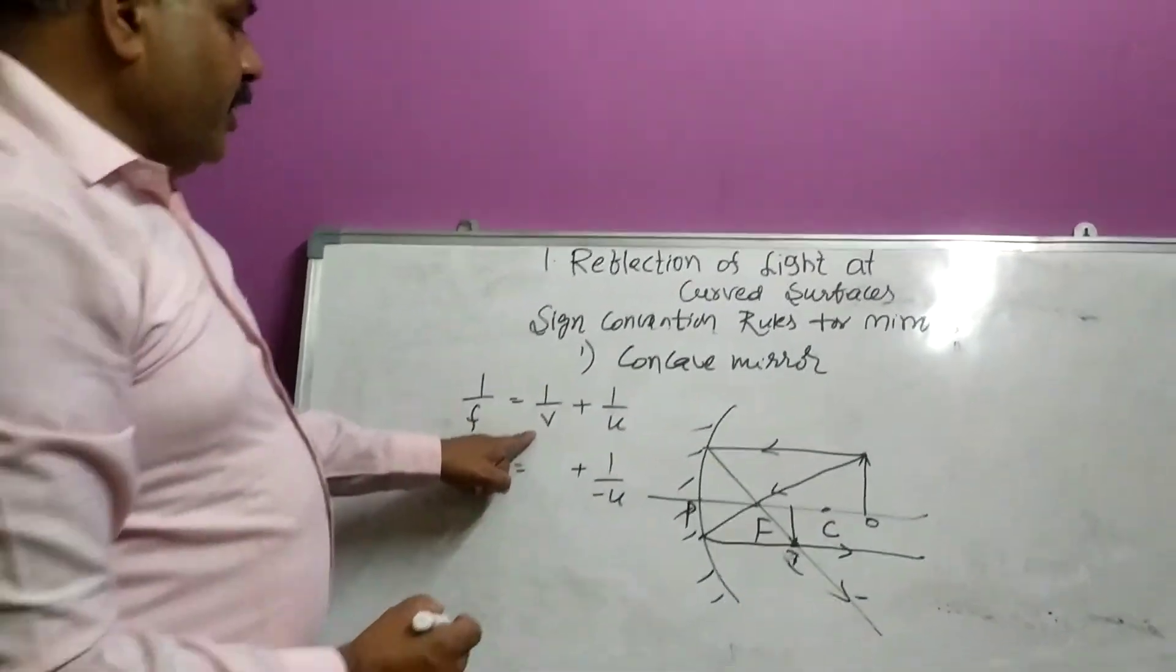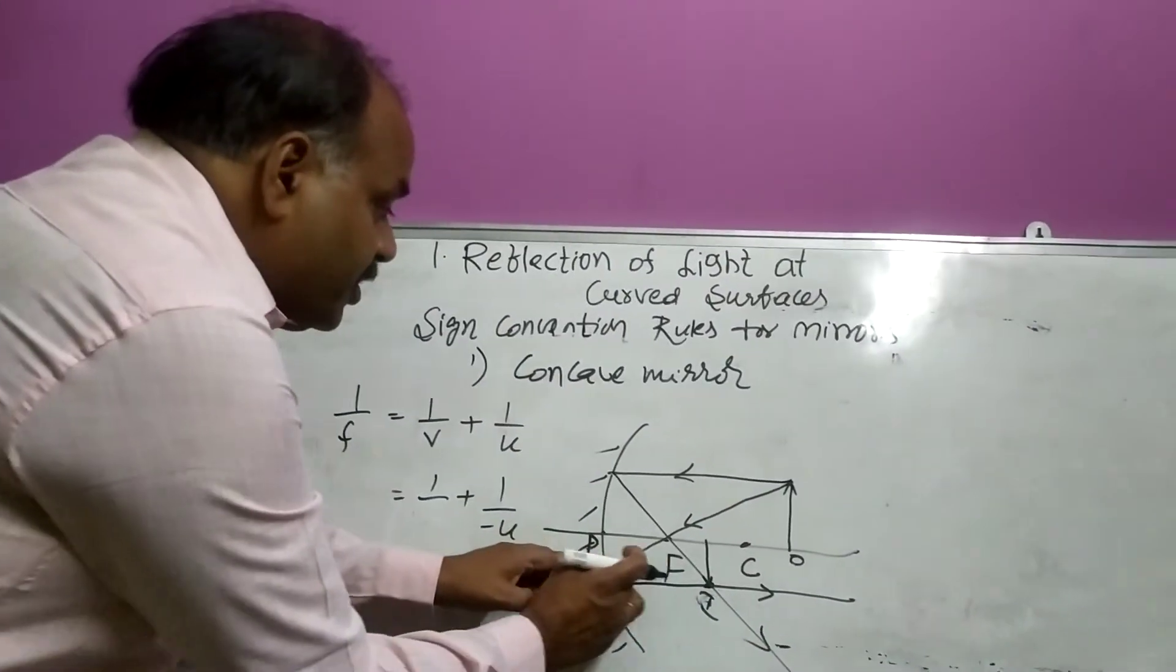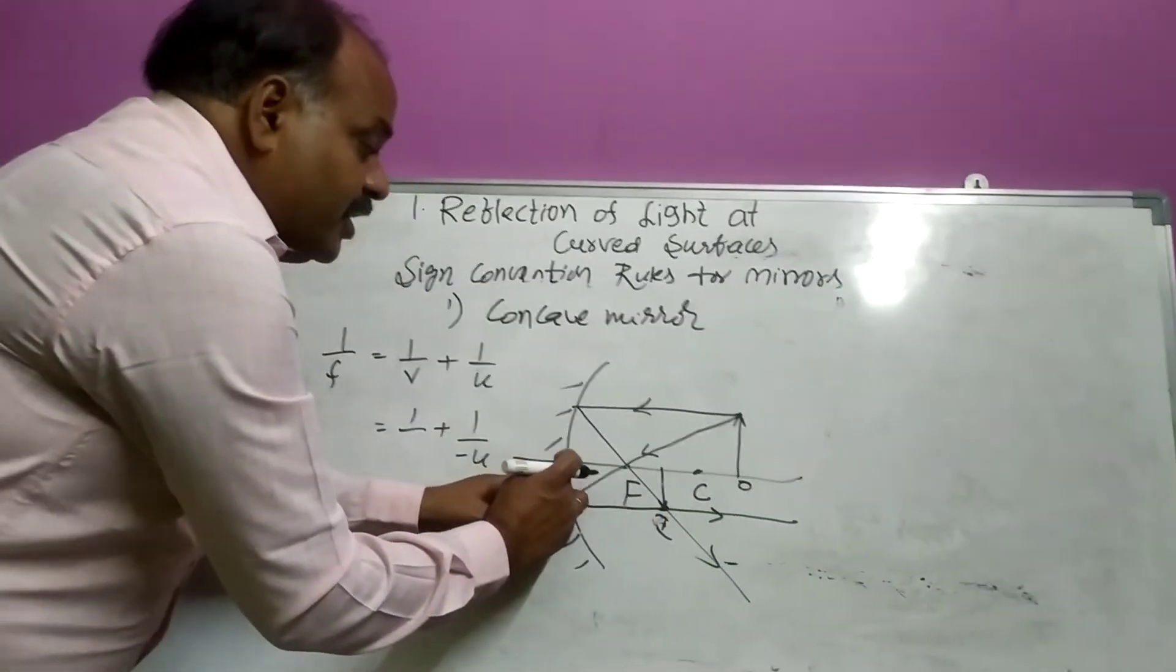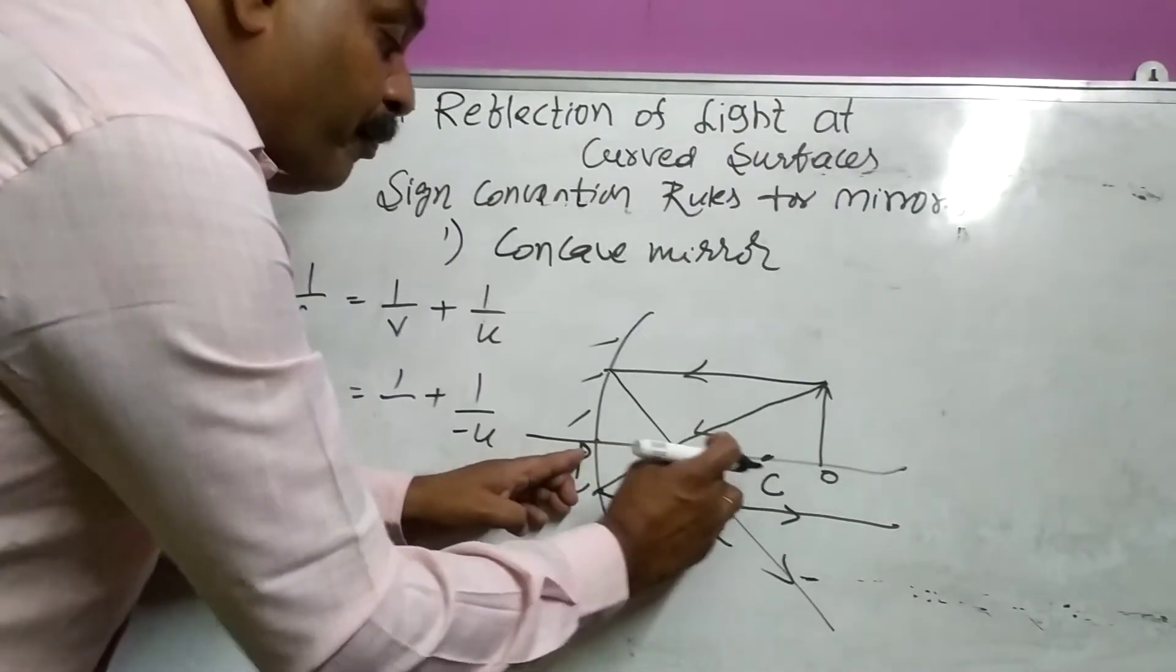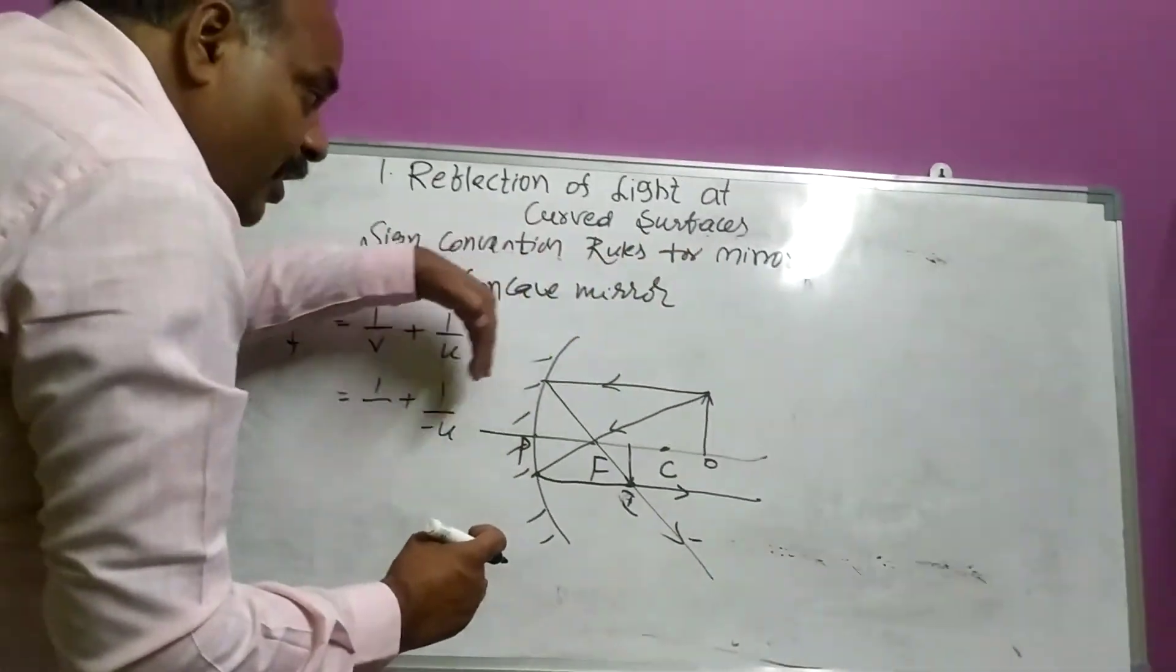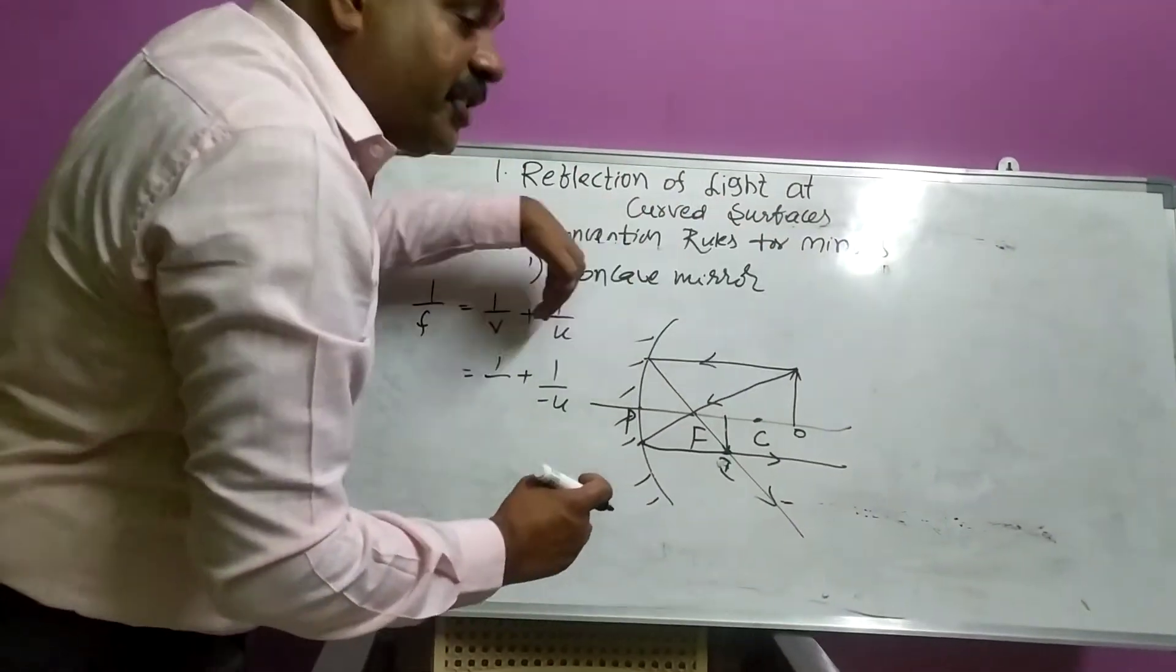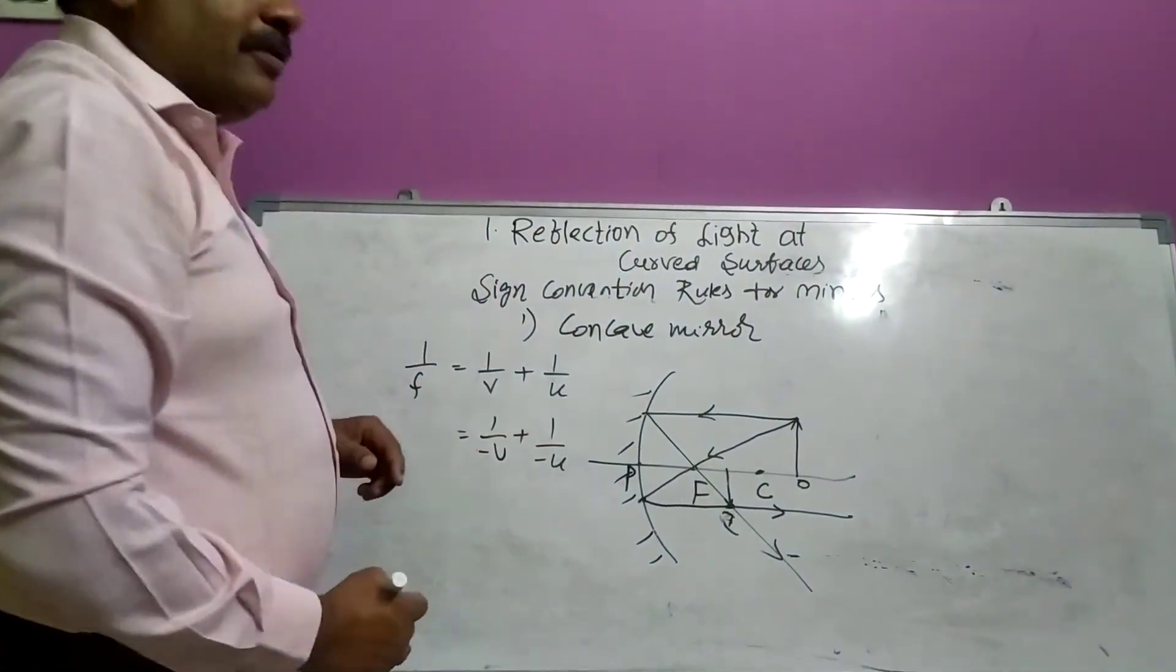Plus, 1 by V. 1 by V means, image distance. Image distance, this is image. Distance is measured from pole. So, we are taking the direction from pole to this direction, right side direction. But, incident ray direction is in opposite direction. That's why, it is taken as minus, minus V.